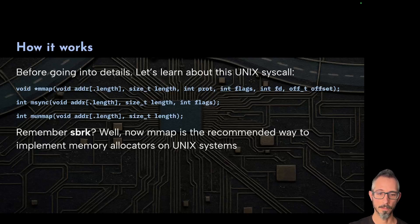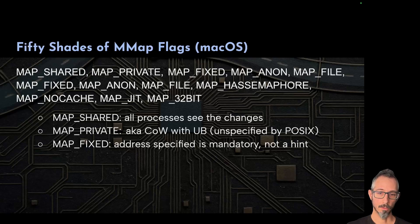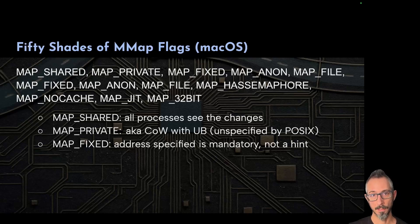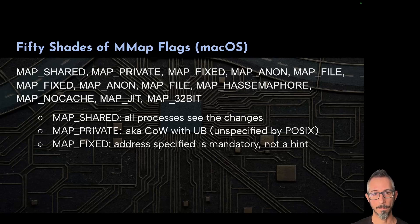Different OS implementations complicate writing portable software. On macOS we have MAP_SHARED, MAP_PRIVATE, MAP_FIXED, MAP_ANON, and others. The most important three: MAP_SHARED means all processes see changes at the same time; MAP_PRIVATE uses copy-on-write, which is kind of like atomic operations but not really; MAP_FIXED makes mapping at the specified address mandatory rather than a hint. POSIX doesn't specify how all of this should work, which means there is undefined behavior — a real problem when writing portable software.